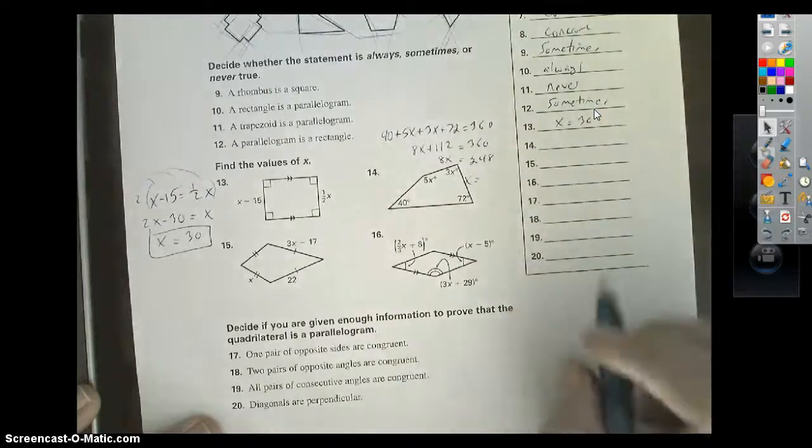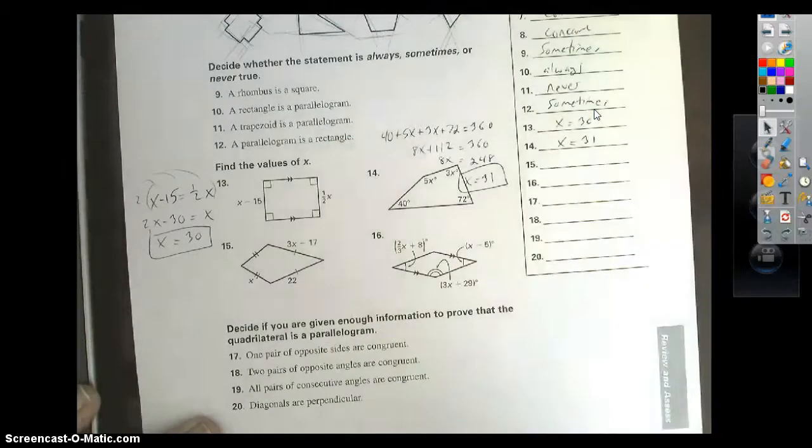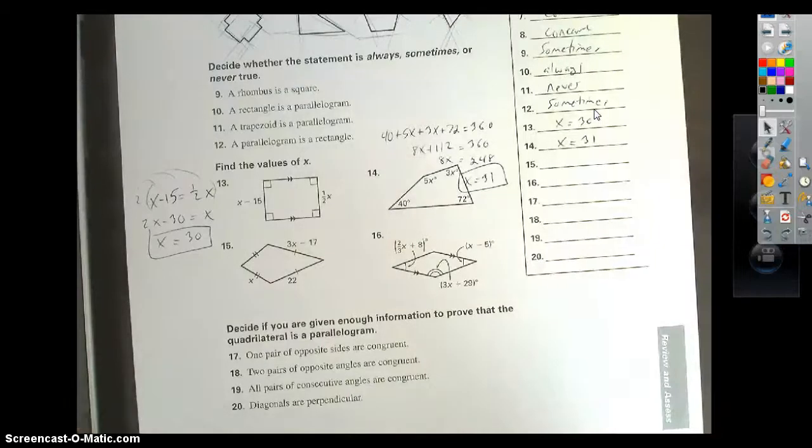Subtract 112 from 360, 248. Divide both sides by 8. We get 31. So again, look to make sure that all of your angles add up to 180.